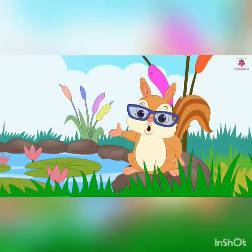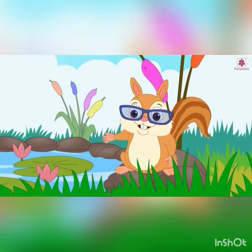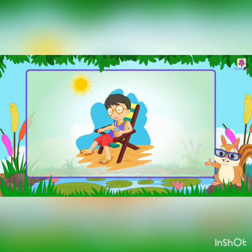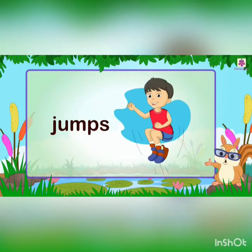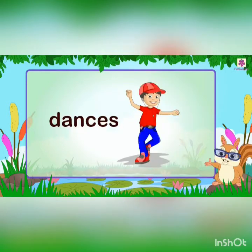Action words tell us what a person, animal or a thing does. Look at here. This is Monty. He does a lot of actions every day. He jumps. Monty jumps. He plays tennis. He dances to his favorite music.